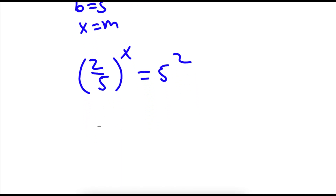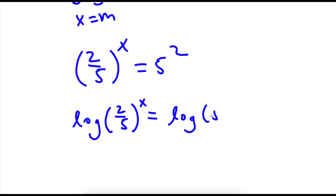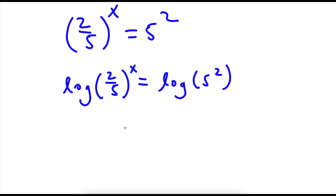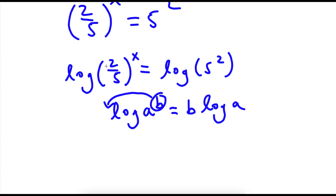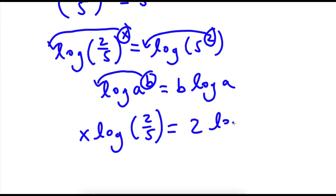Now, I'm going to take the log on both sides. So now I have log of 2 over 5 to the power of x is equal to log of 5 squared. Because I took the log, I can use an important property of logarithms which states that if I have log a to the power of b, I can move this exponent b to the front of the logarithm — this equals b times log a. So log of 2 over 5 to the power of x becomes x times log 2 over 5, and log 5 squared becomes 2 times log 5.